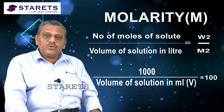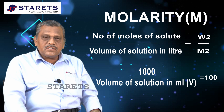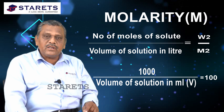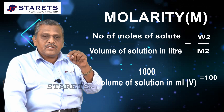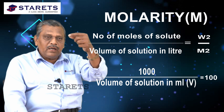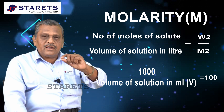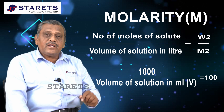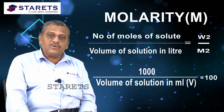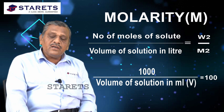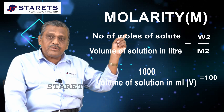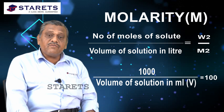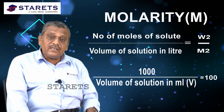The number of moles of solute dissolved in 1 liter of solution gives molarity. We can write capital M equals N2 divided by V, where N2 represents the number of moles of solute and V is the volume of solution in liters.